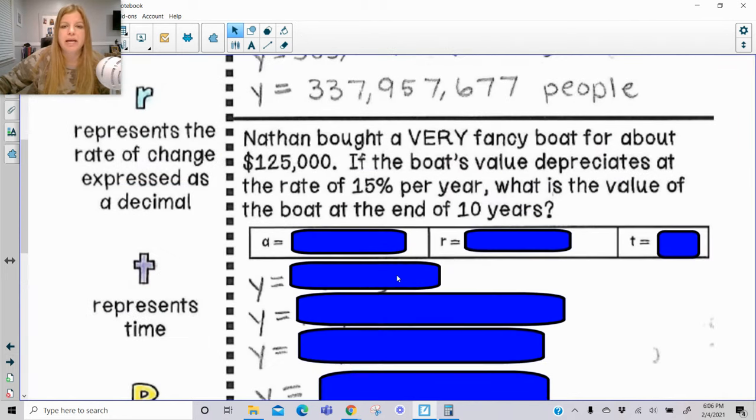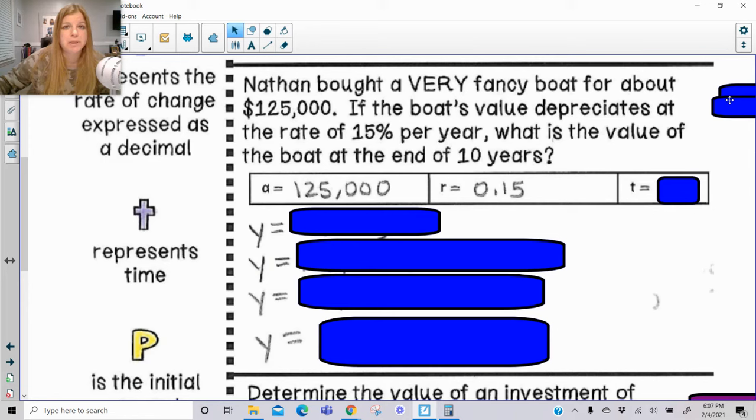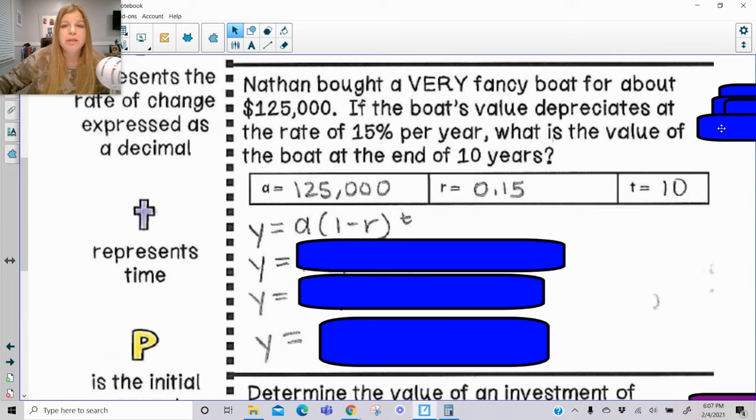And that's my only difference. So now let's take a look at this first decay problem. It says Nathan bought a very fancy boat for about $125,000. If the boat's value depreciates at the rate of 15% per year, so every year that boat that he spent that much money on, the value goes down 15% every year because of the use of it, and it's just, it's not shiny and new anymore. What is the value of the boat at the end of 10 years? So I have my initial amount.